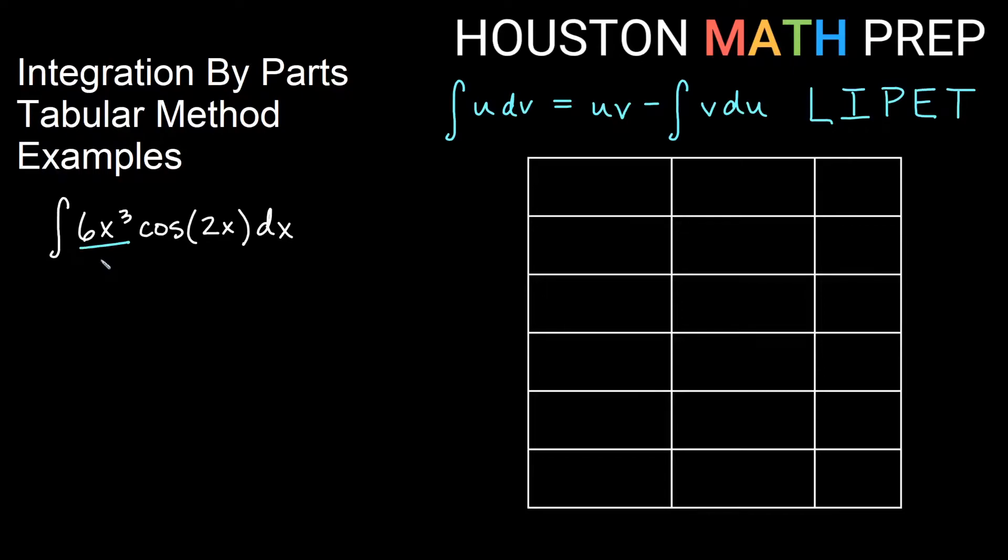Here I'll notice that my polynomial and my trig functions are what I'm choosing for u and dv. Since P comes before T in LIPET, I know that this will be my choice for u, so that makes this a candidate for the tabular method.